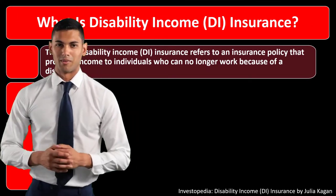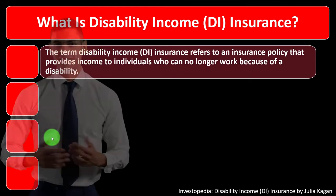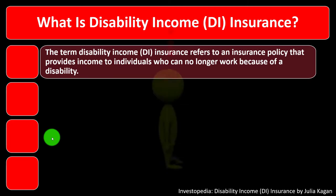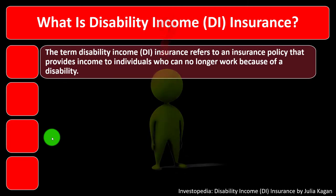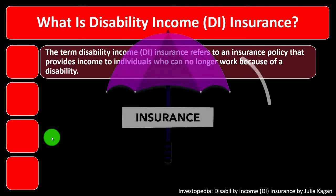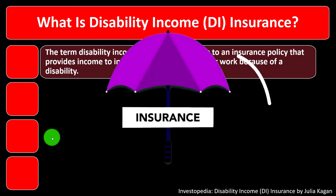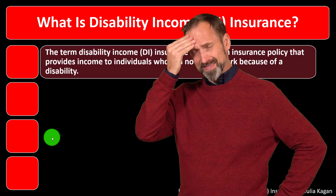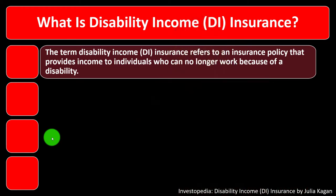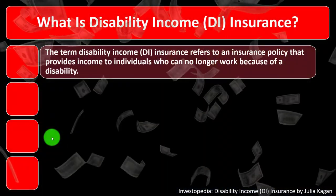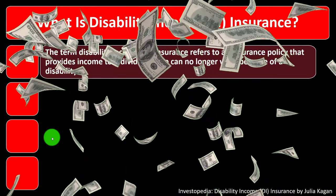In prior presentations, we've been thinking about insurance in general, then we moved to medical insurance. Now we're thinking about disability income insurance. If you think about classical kinds of insurance — things like property insurance, liability insurance, or life insurance — we're often insuring against something we're hoping doesn't happen in the future, but if it did happen, would be financially devastating.